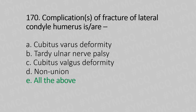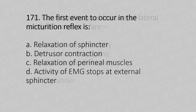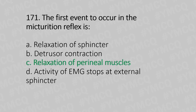Question 171: The first event to occur in a micturition reflex is — Option A: Relaxation of the sphincter, Option B: Detrusor contraction, Option C: Relaxation of the perineal muscles, Option D: Activity of EMG stops at external sphincter. And the answer is Option C, relaxation of the perineal muscles.